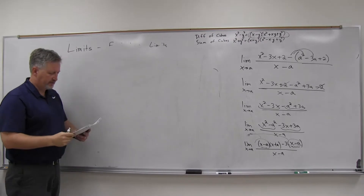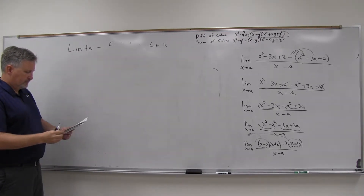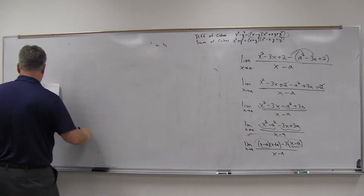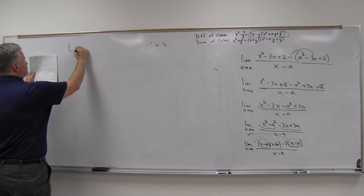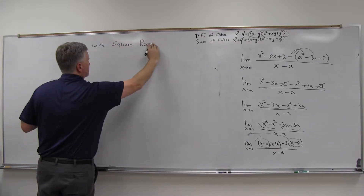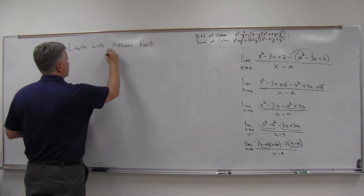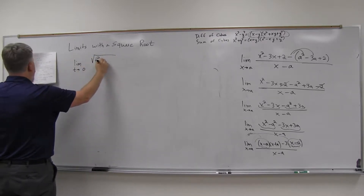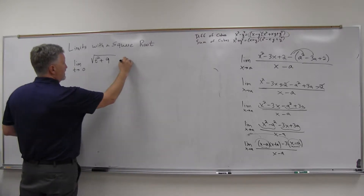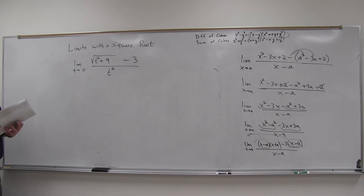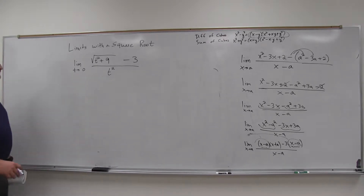Here's the next one. We've got the limit as t goes to zero of the square root of t squared plus nine, minus three, over t squared. If you check it when t goes to zero, it's zero over zero, so we have to do something else.